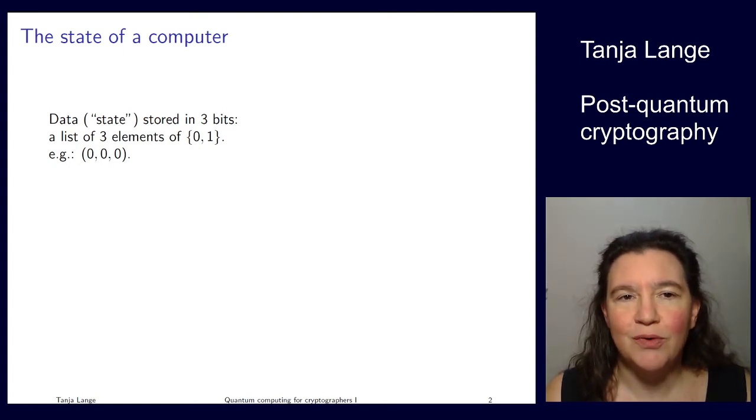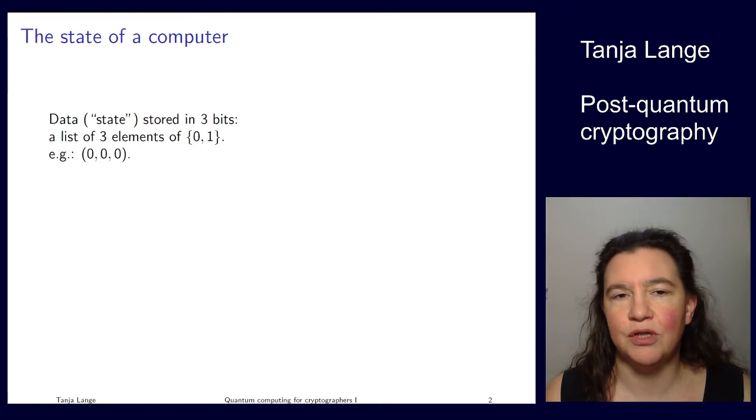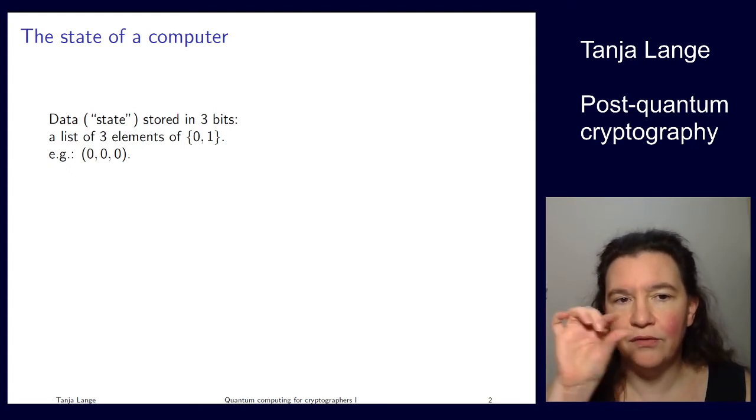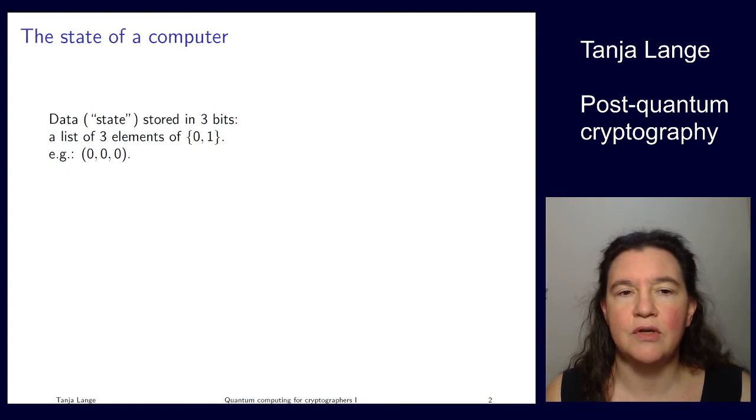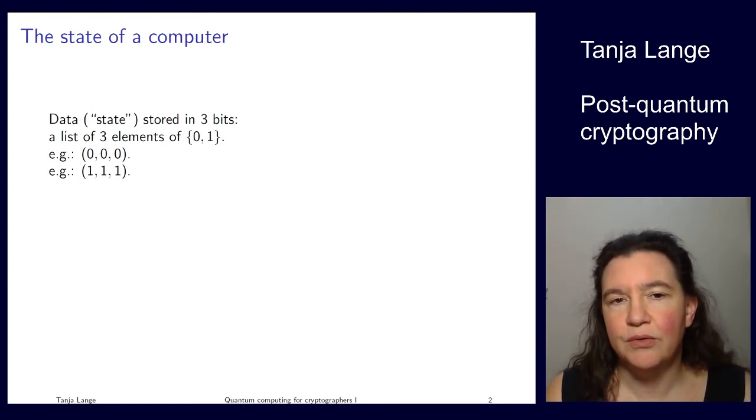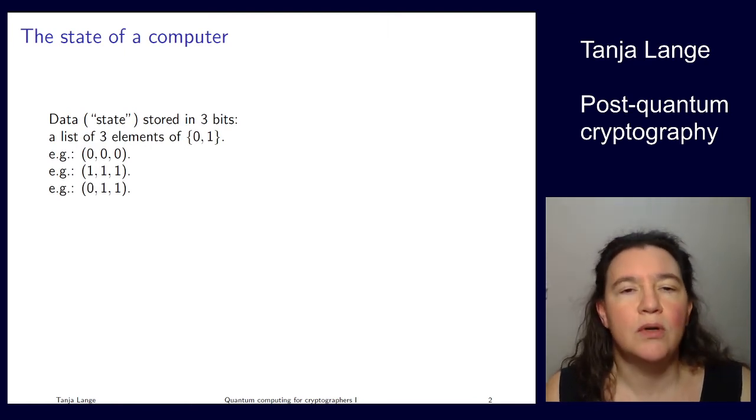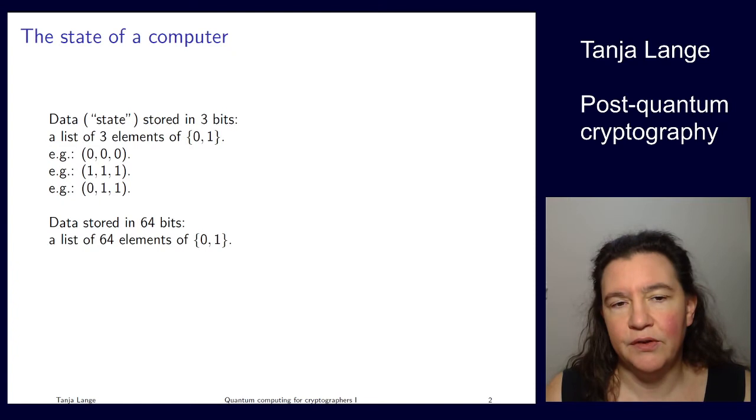So let's go back to how a normal computer works. There we have our data stored in bits. A bit can take the values 0 or 1, and if you have 3 bits, then you can get any tuple of 3 elements. For instance you can get 0, 0, 0, or you can get 1, 1, 1. So those are 2 of the possibilities. In total there are these 8 different elements you get.